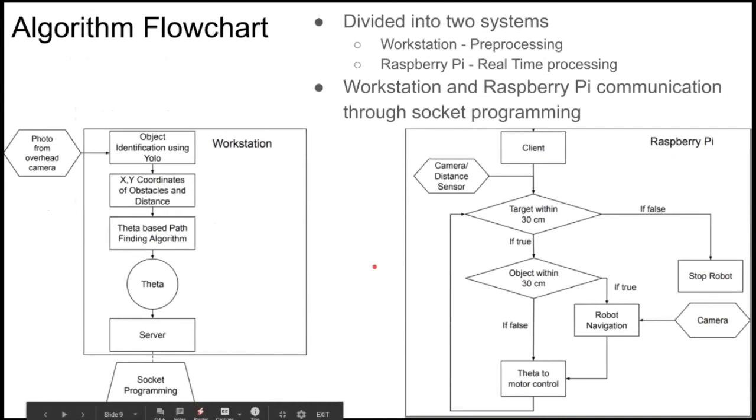This is the flowchart of how all our different systems have been working together. All our systems have been divided into two separate systems, which was one was the workstation which did most of the preprocessing and the Raspberry Pi which did the real-time processing. In the workstation, we took most of the preprocessing involved in creating the path for the robot to take to get to the specified target.